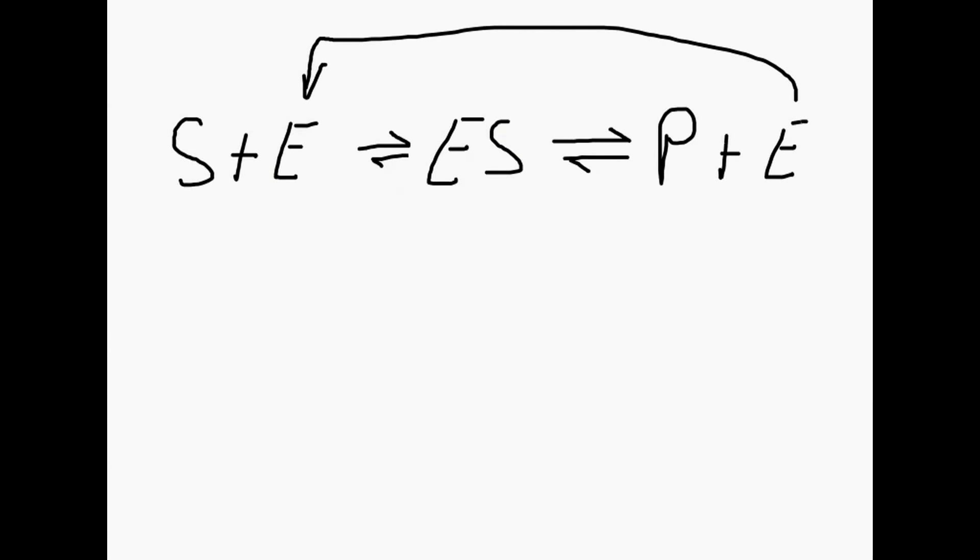What we usually do is indicate these reaction rates as k1, k-1, k2, and k-2.